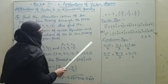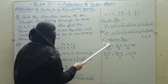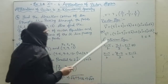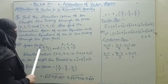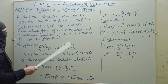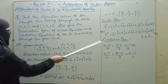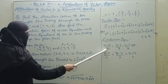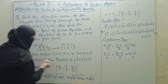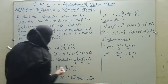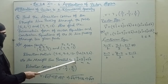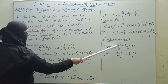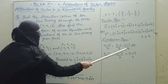Now for the Cartesian equation, the formula is: (x minus x1) by L equals (y minus y1) by M equals (z minus z1) by N. Substituting the first point (x1, y1, z1) = (5, 6, 7) and direction ratios (2, 3, 6): (x minus 5) by 2 equals (y minus 6) by 3 equals (z minus 7) by 6.